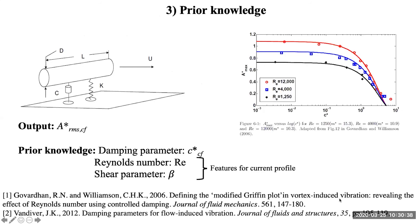As for the prior knowledge, we make use of experimental investigations from a simpler setup: VIV for rigid cylinders. A lot of experiments have found that increasing the damping for this kind of system will effectively decrease the response amplitude, while increasing the Reynolds number will increase the response amplitude. Therefore, we use the damping parameter C* and Reynolds number as our prior knowledge, and on top of these two we also include the shear parameter, because for flexible cylinder experiments the shear parameter can vary depending on whether the flow is uniform or linearly sheared.